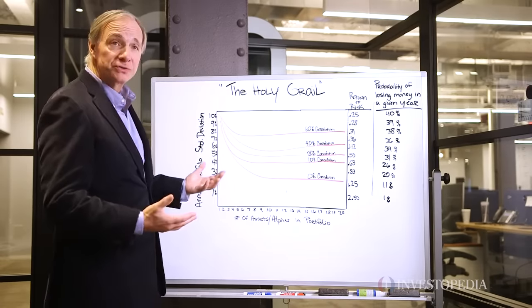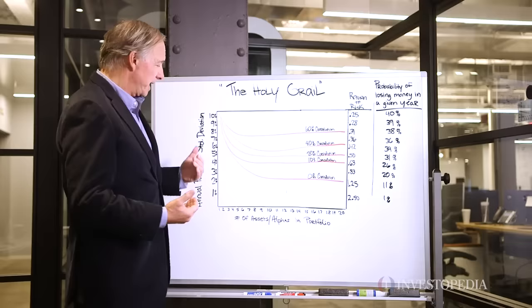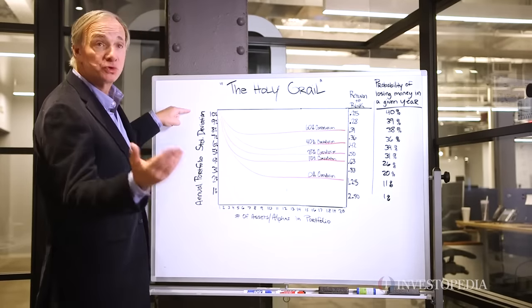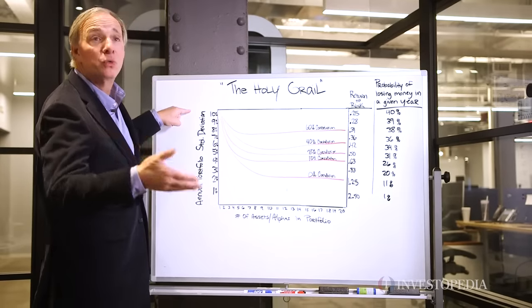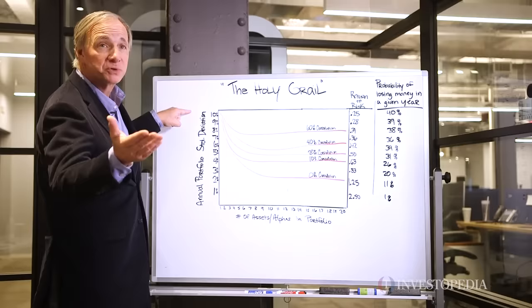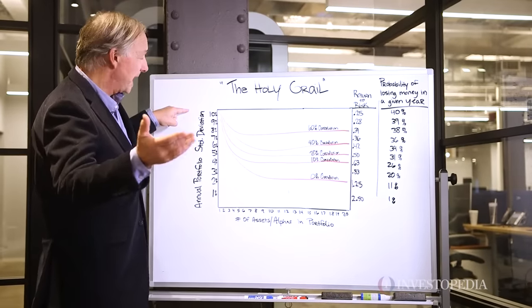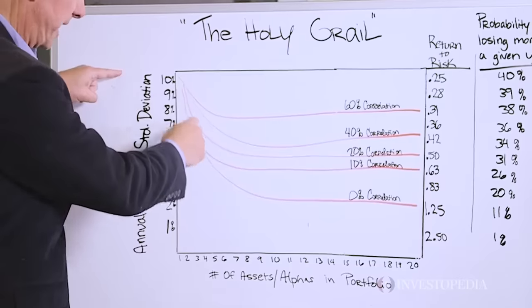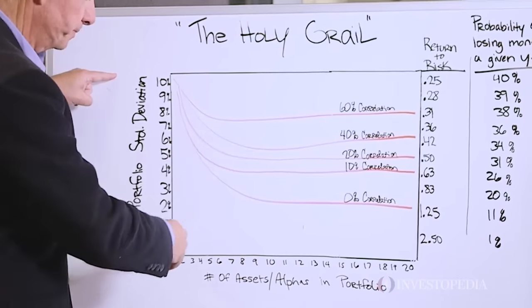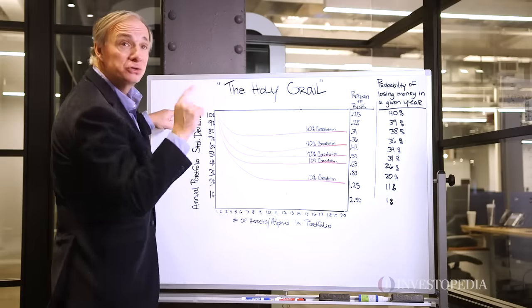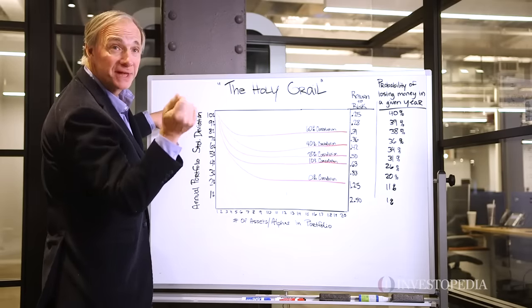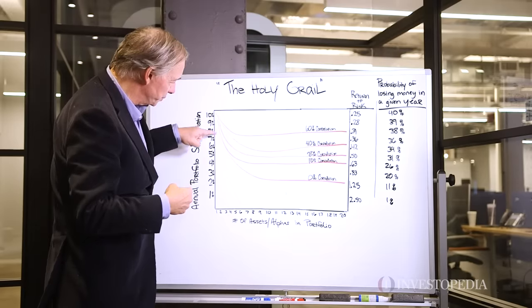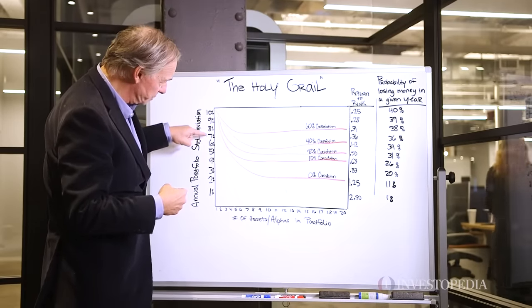That's what this chart shows. Imagine you have a 10% average return. You don't know which bet is going to be better — it has a 10% average return and a 10% risk. And you add in a second and a third and so on. You're not going to lose the 10% return, but you're going to get a reduction in risk.